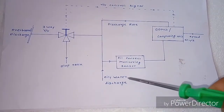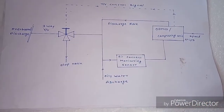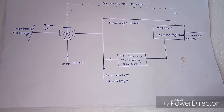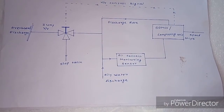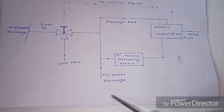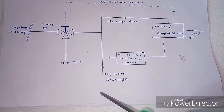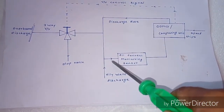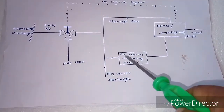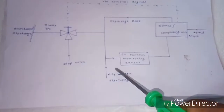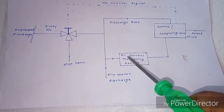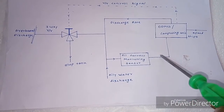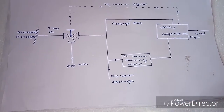We already know the Oil-Contained Monitoring Sensor — if you don't know, please watch my previous video where it is completely discussed. Here there is a slop tank where cargo residue is collected. It is to be discharged through this pipeline, and this pipeline is monitored by the sensor, which monitors the oil content. The oil content should not be more than 50 ppm. This measured value is transferred as a signal to the computing unit.